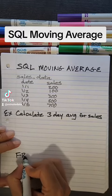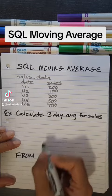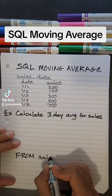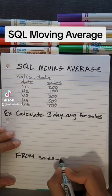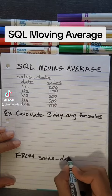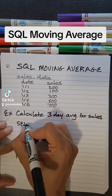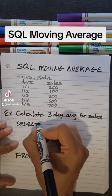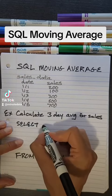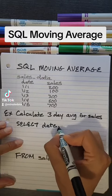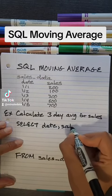Let's start by selecting our table. This is coming from our sales data table. We want to select our original variables — date and sales.